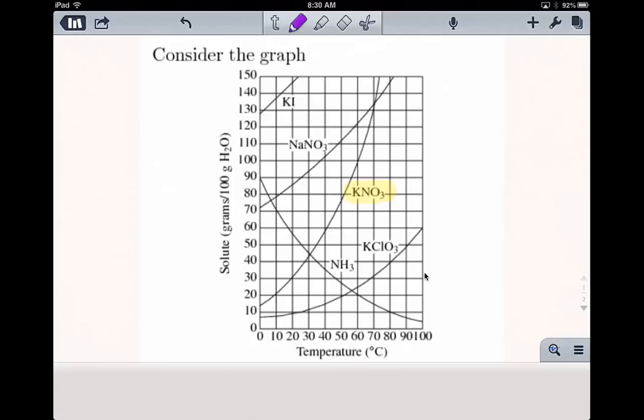At let's go with 60 degrees Celsius, you just find your temperature on your x-axis, trace up until you get to the potassium nitrate line, and we find that potassium nitrate has a solubility of 100 grams of solute.